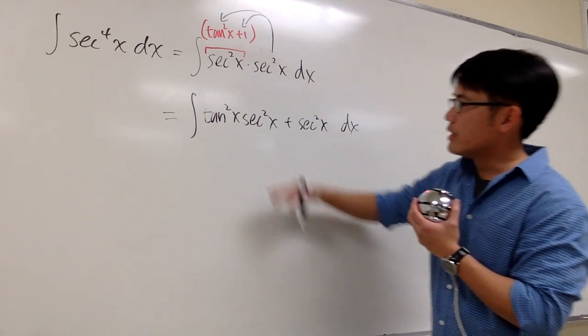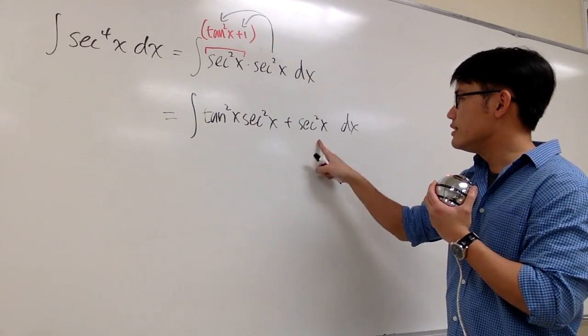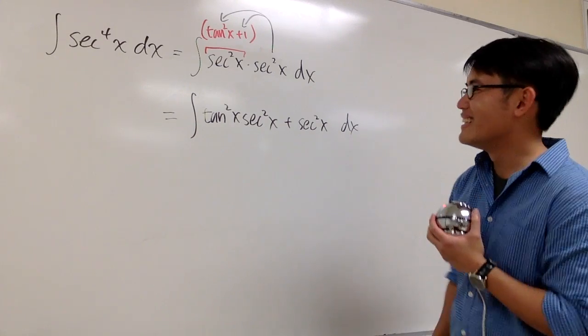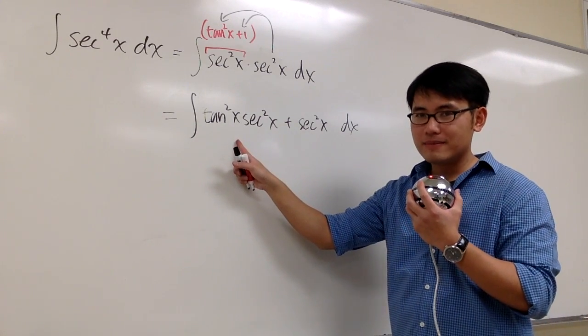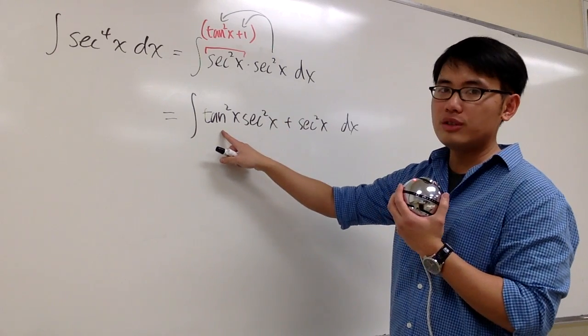And now the question is, how can we integrate this? This is easy to integrate because that's just tangent. As we can see, we're pretty lucky to have secant squared x right here. And then we have the tangent.